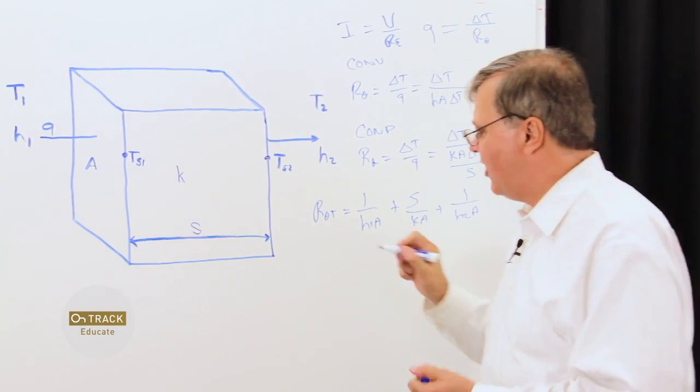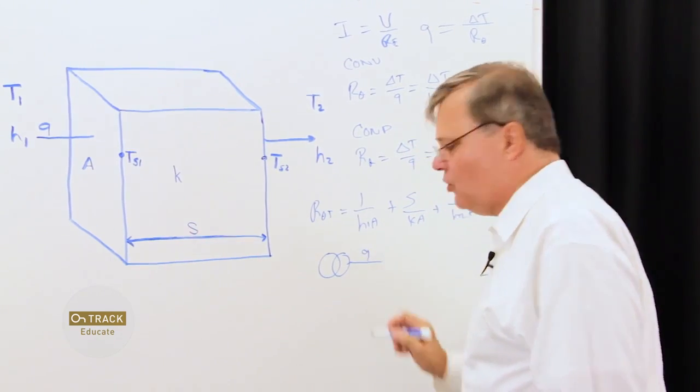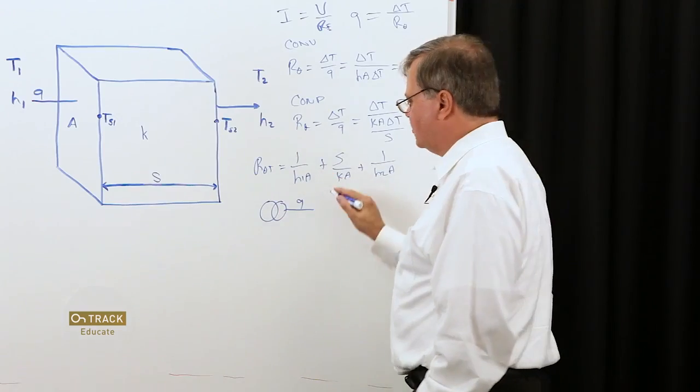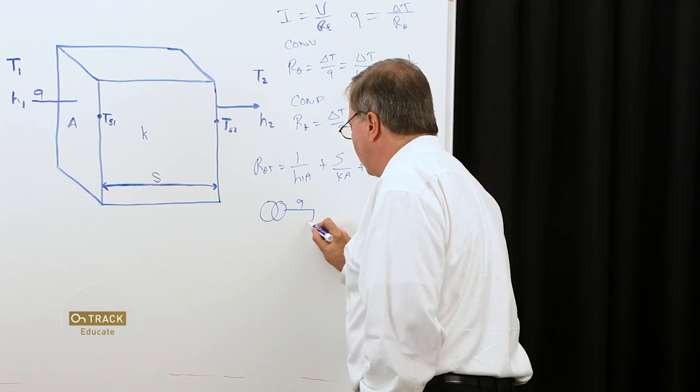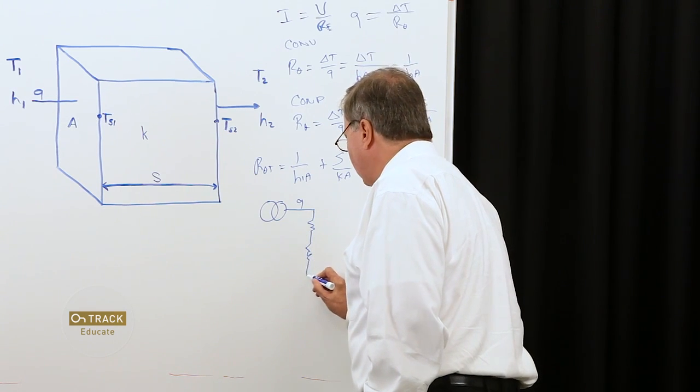our heat transfer is the equivalent of our charge transfer. So, we can represent that by a current source of value Q. So, our heat transfer then is going to flow through our thermal resistances for our three regions.